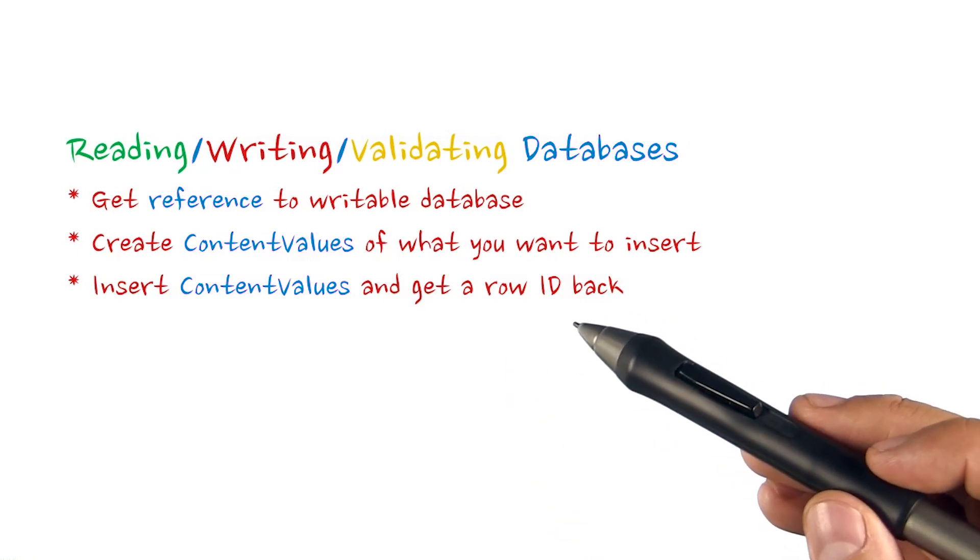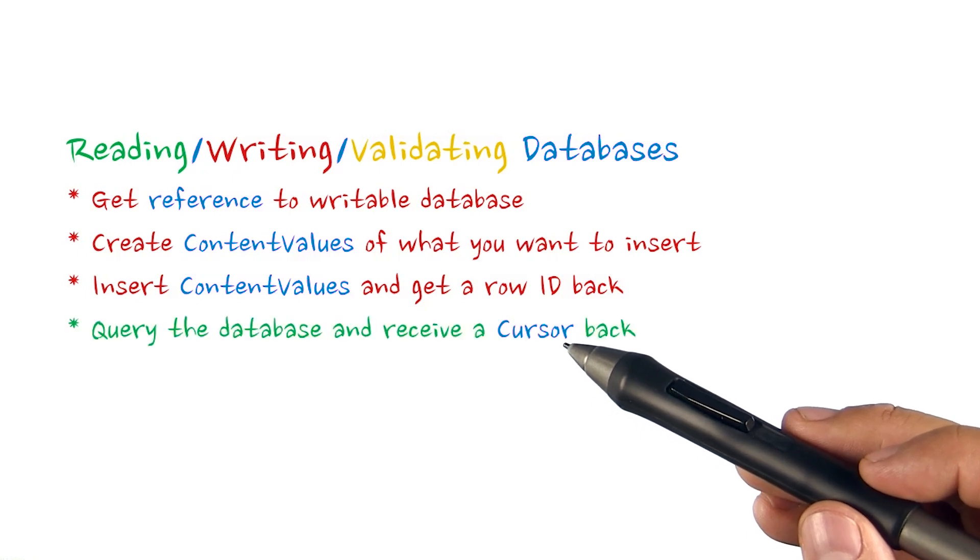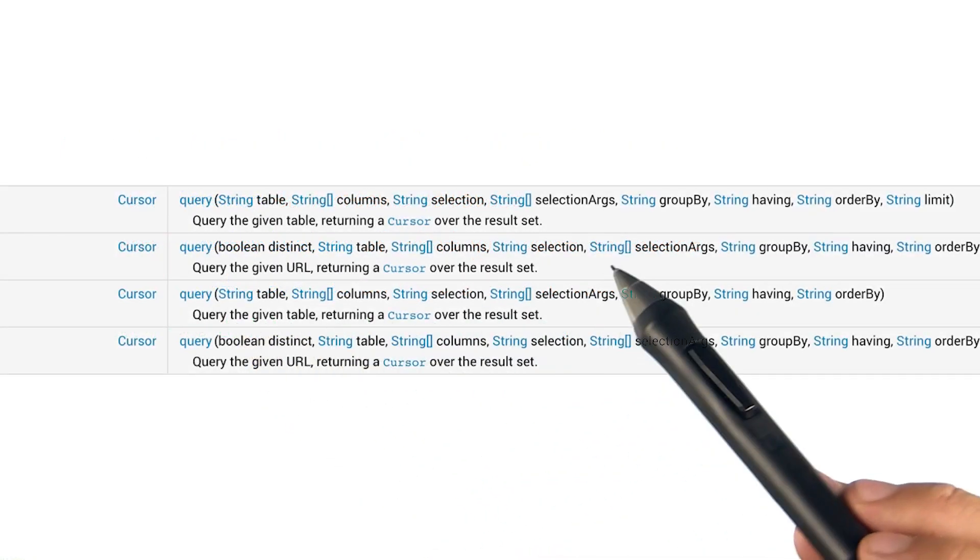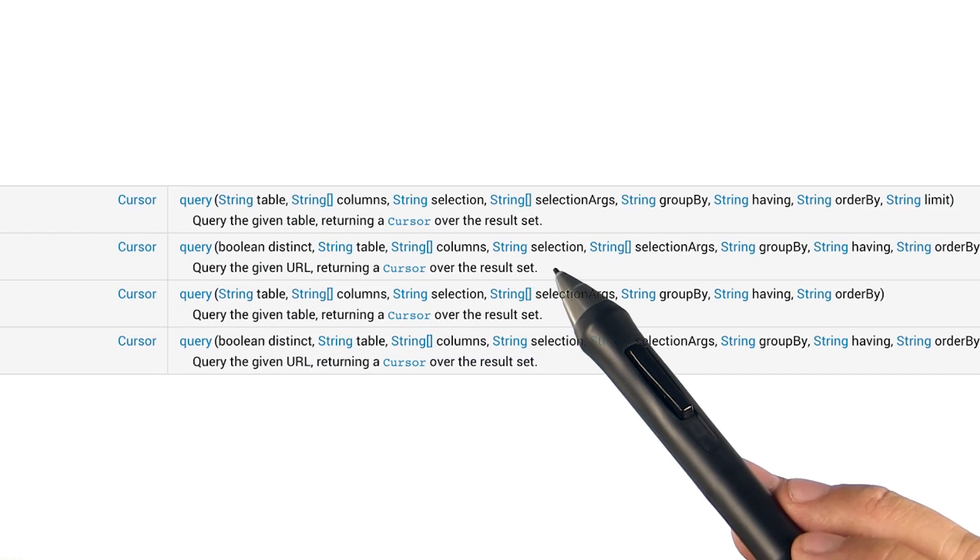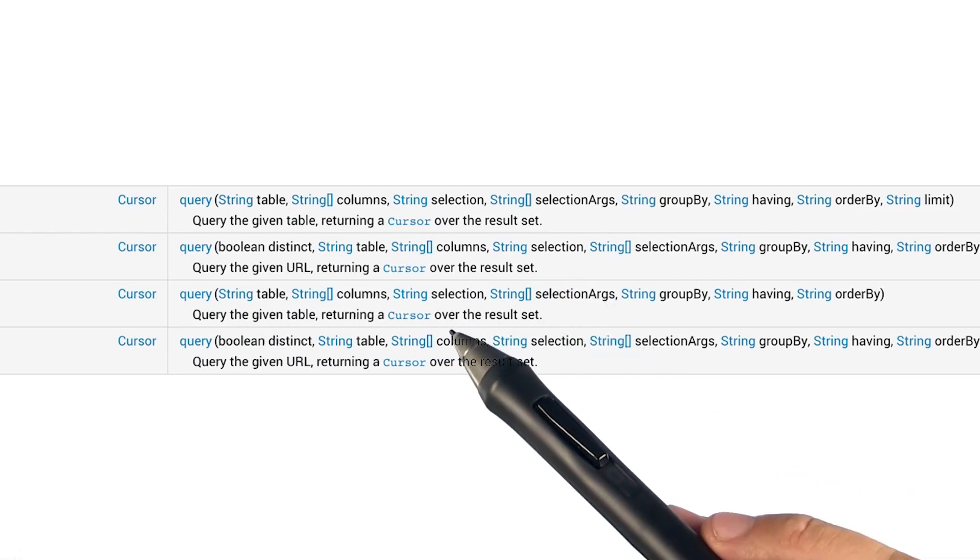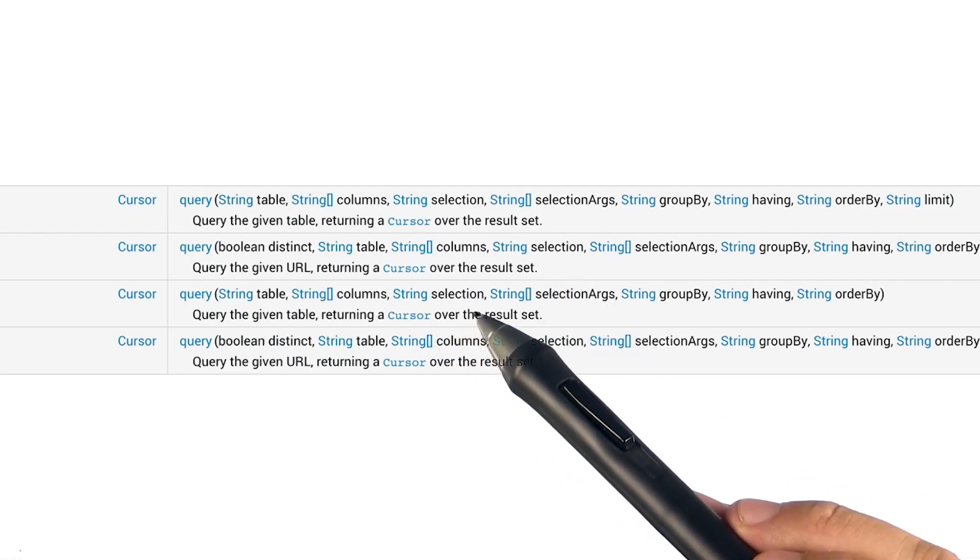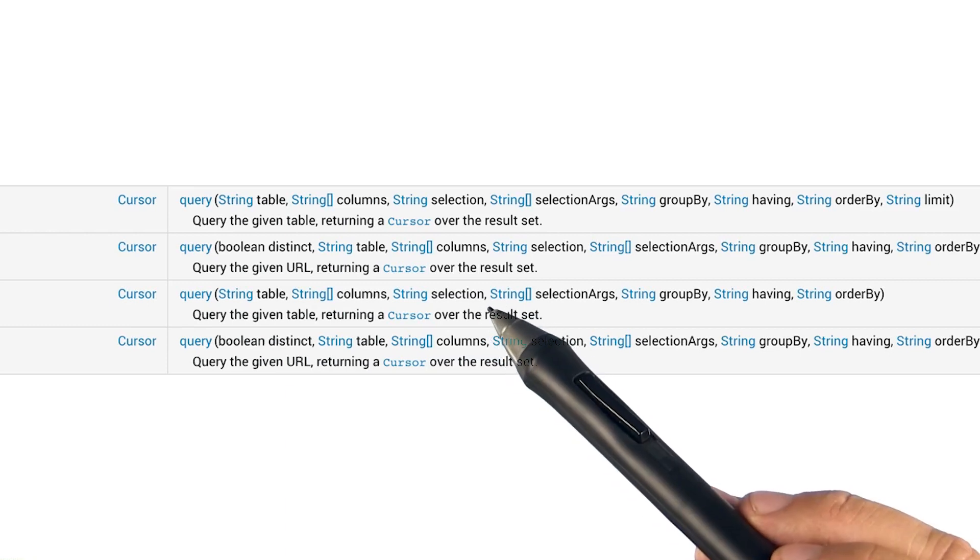Now that we have a row ID, we can query the database for that row. There are several query methods that take in different numbers of parameters. A query method is just a helper function to make it easier to construct and execute a select statement. Let's show how the query function constructs the statement.